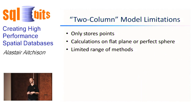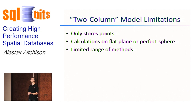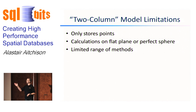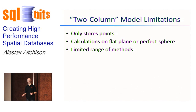The limitations of the two-column model: because we are only storing a single coordinate value with each row of data, you can really only use it to store point locations in space. You can't easily store routes, areas, or polygons. The calculations are based either on a flat plane — for example, if storing national grid coordinates in Great Britain — or, as in the spherical law of cosines method, on a perfect sphere. Both of these are approximations, so you're going to introduce approximation errors into your results. Also, there's a fairly limited range of spatial methods available. If you wanted to do more complicated spatial queries, it gets pretty intensive to write that in T-SQL.